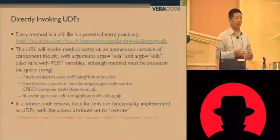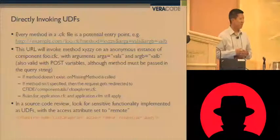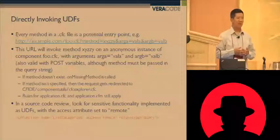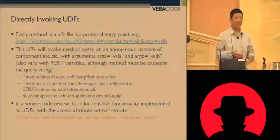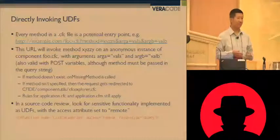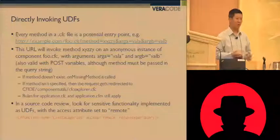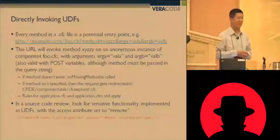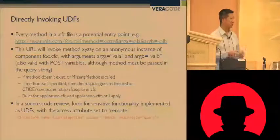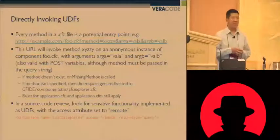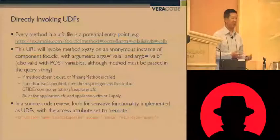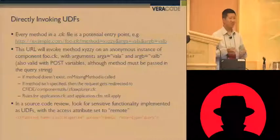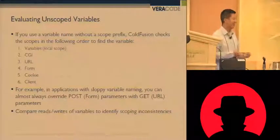Sometimes people will turn on access remote for testing purposes and not turn it off. Sometimes they'll misinterpret what remote actually means — they'll think it has to be remote for another page to call it. Those are common developer mistakes. Watch for that attribute: if you see 'access equals remote,' then it's something that can be called remotely. Especially if it's something sensitive that's only intended to be called by other pages, someone could call it directly and change permissions or access parts of the application they shouldn't be able to access.